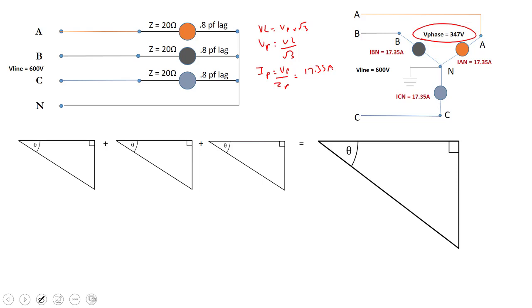Now we're going to start looking at how to calculate the total three-phase apparent power. I've already drawn triangles below — each one represents a phase in the circuit. For example, this one is for phase A to N. There's your apparent power S_A-to-N at a power factor of 0.8, with true power P_A-to-N on the horizontal and quadrature power Q_A-to-N on the vertical. The next three triangles are going to be identical because this is a balanced circuit.